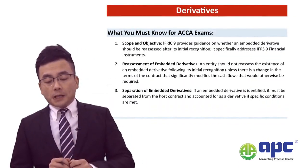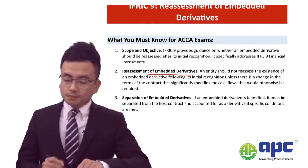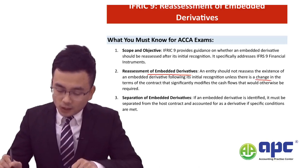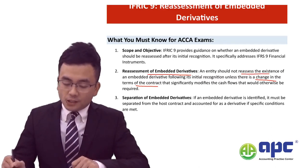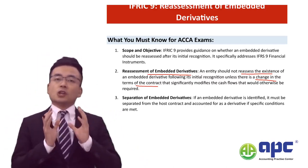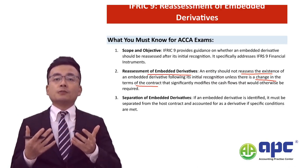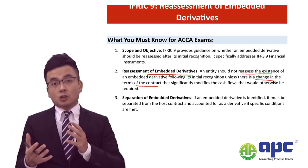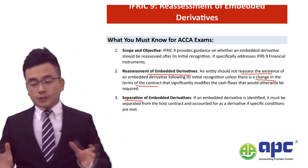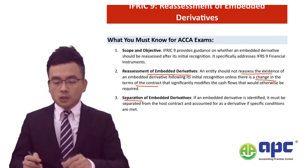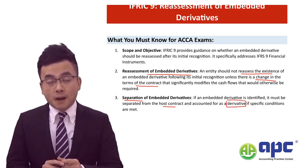Let me take you back to the standard content. For the reassessment of the embedded derivative: if there's a change in the terms of the contract, we will not reassess the existence of the derivative. For example, initially we sign a contract and determine that an embedded derivative exists. Later on, we don't need to ask ourselves whether it still exists, because there's no change in the contract term — that derivative still exists. However, we need to separate it out. We identify the embedded derivative — something on top of the host contract — and account for it separately as a derivative using the fair value through P&L method.